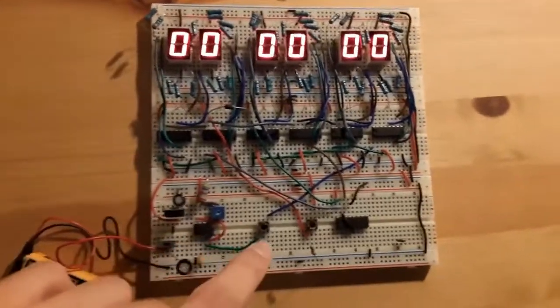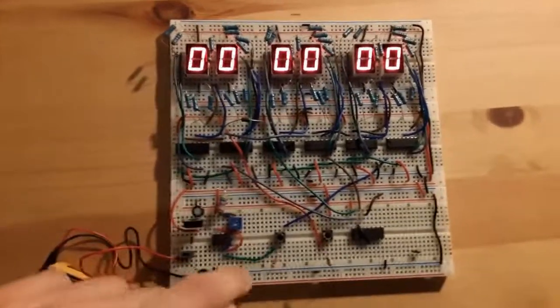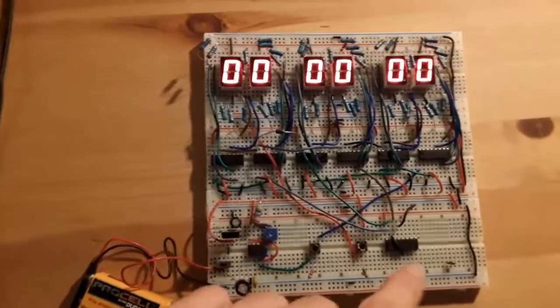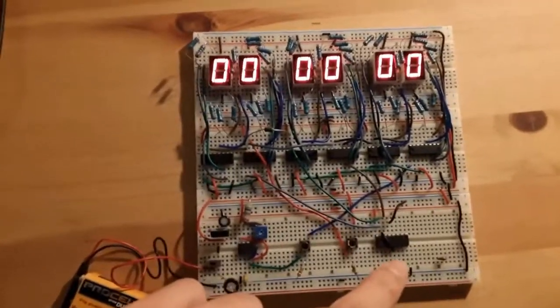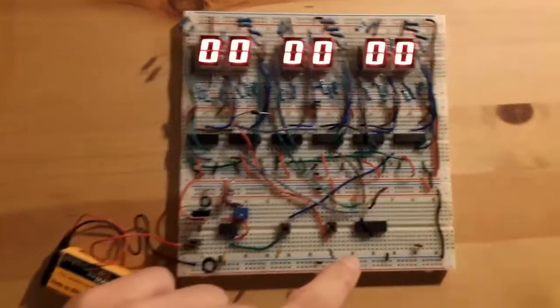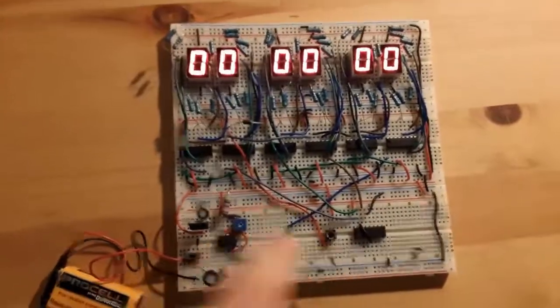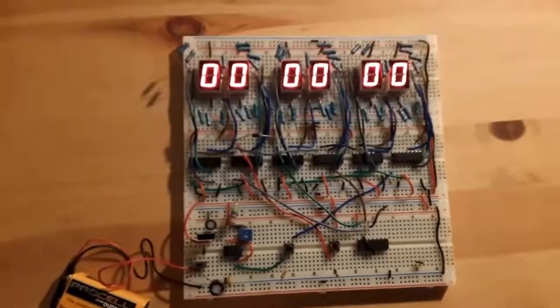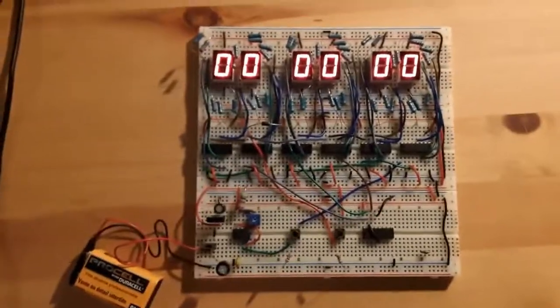Then that gets hooked up to our start and stop button and our reset button. Over here, you have a decade counter which, as I said before, counts up to 6 and resets the number of seconds and increments the number of minutes when it gets to 6, or 60 seconds, essentially.